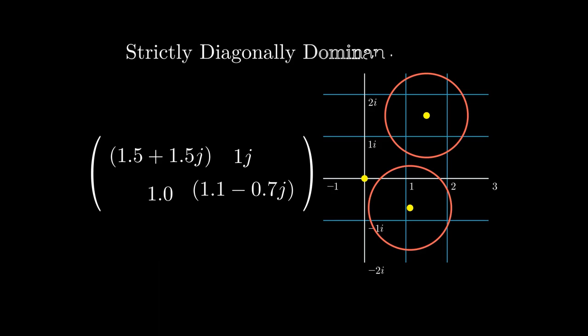By the way, this kind of matrix is called the strictly diagonally dominant matrix, which have the modulus of radius smaller than the modulus of the center.